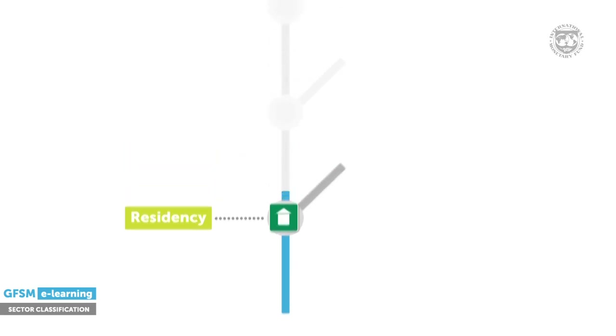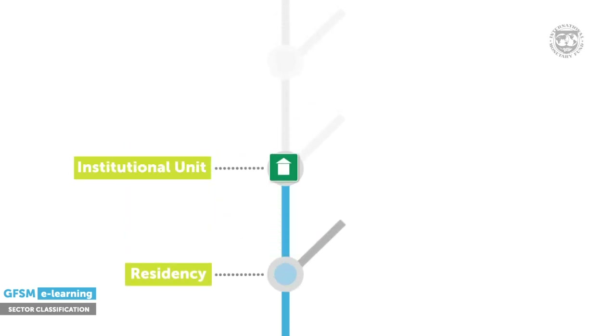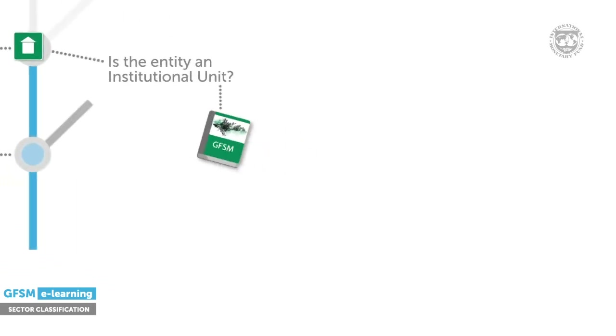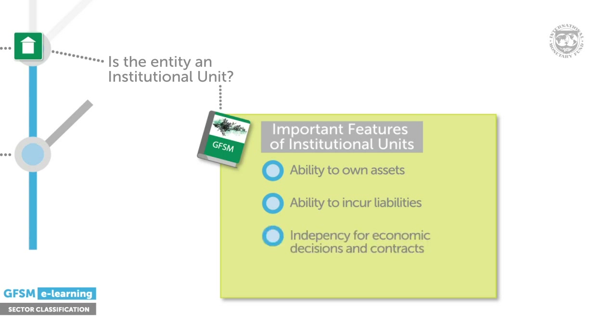The next question is whether an entity is something statisticians call an institutional unit. Institutional units are the statistical building blocks of the economy. An institutional unit is defined by the fact that it can own assets, incur liabilities on its own behalf, independently engage in economic activities and contracts, and compile a full set of accounts. This usually means it will have a legal identity and has been formally established as, for example, a company, a charity, or an entity established by legislation.